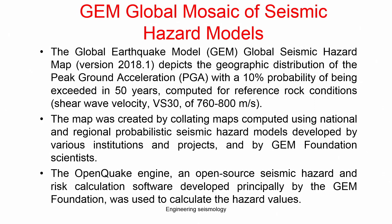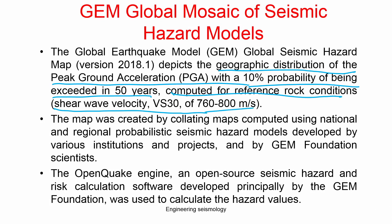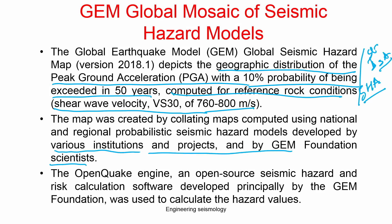The GEM Global Mosaic of Seismic Hazard Model — GEM Global Seismic Hazard version 2018 — depicts the geographical distribution of peak ground acceleration with 10 percent probability of exceedance in 50 years, computed for reference rock conditions with VS30 of a specified value. They performed probabilistic seismic hazard analysis and considered the hazard value at the bedrock level. The map was created by collecting maps computed using national and international probabilistic seismic models developed by various institutes and GEM foundation scientists.